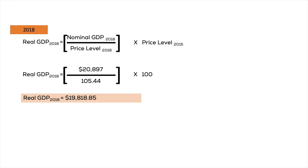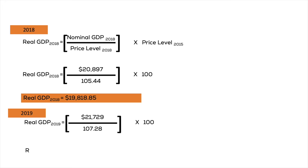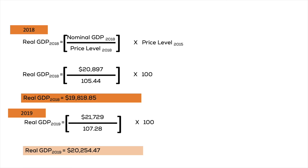Let's try that out for 2019 as well. Nominal GDP in 2019 was 21.7 trillion dollars, divided by the price level of 2019, which is 107.28, multiplied by the price level of the base year, 100. That tells us the real GDP of 2019 is 20.2 trillion dollars in 2015 dollars. Now we can see the progression of our real output throughout the years, and all we needed was nominal GDP and the price level.